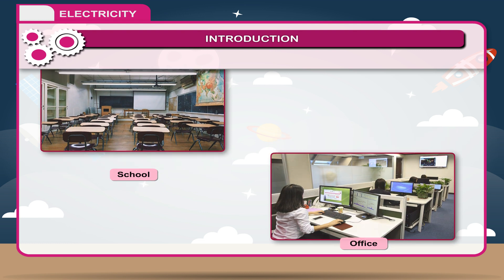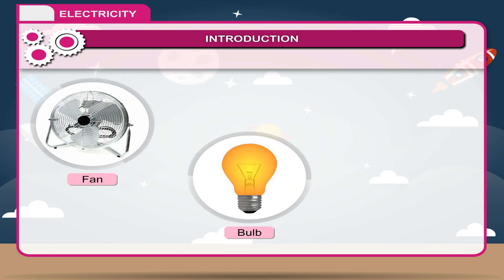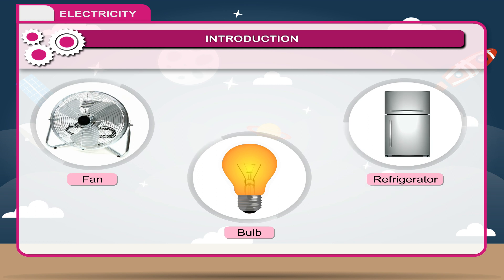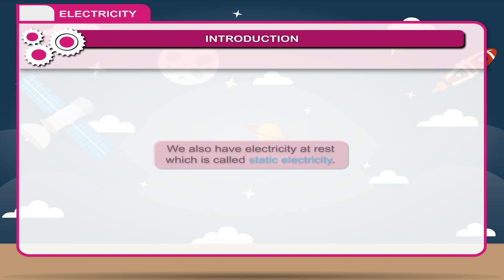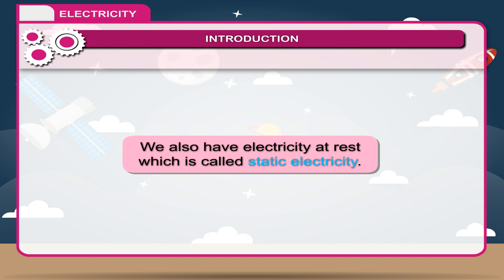Appliances like fan, bulb, refrigerator etc. use electricity to work. These are examples of electricity in motion — flowing electricity. We also have electricity at rest, which is called static electricity.